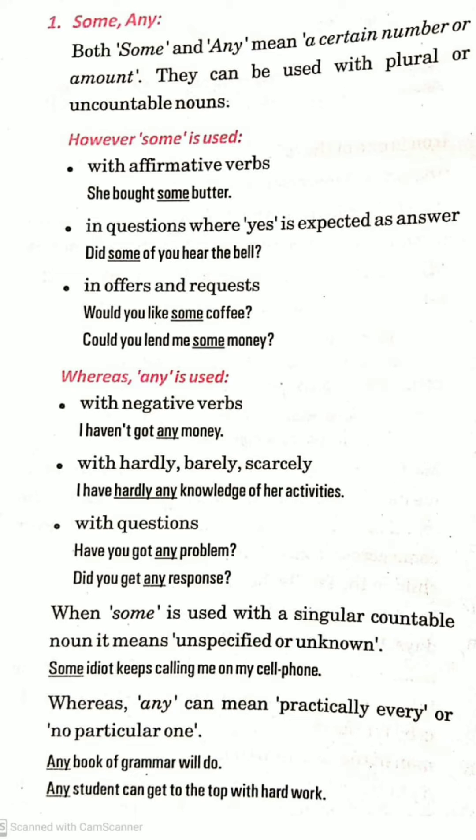Whereas 'any' can mean practically every, or no particular one. Like: 'Any book of grammar will do' — meaning everything will work. Or 'Any student can get to the top with hard work' — we are talking about practically everyone and no particular person. That's how we use 'some' and 'any.'